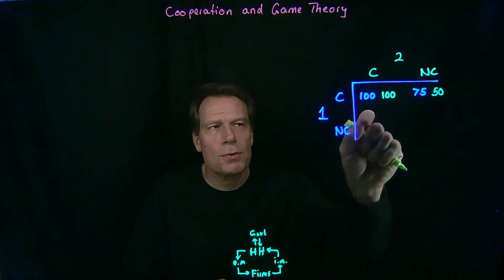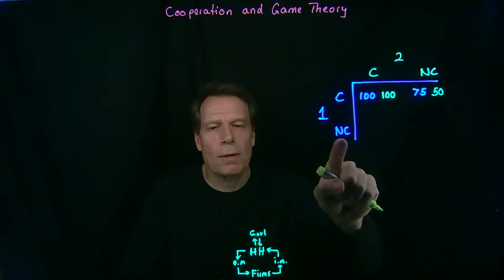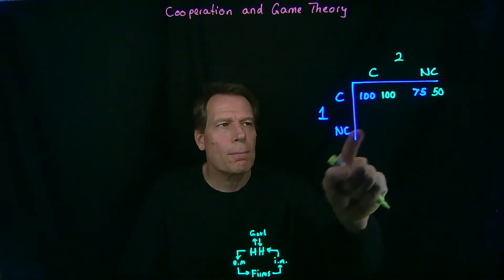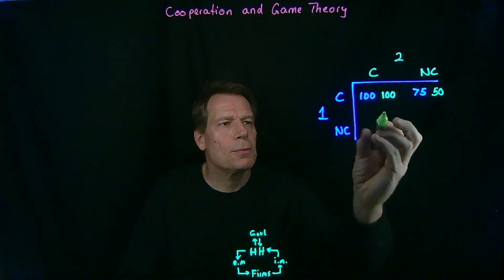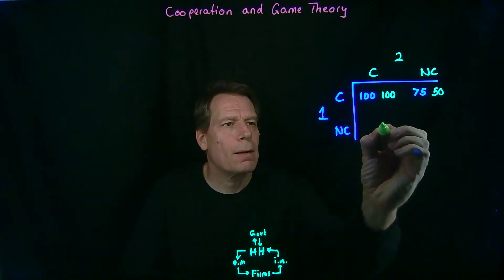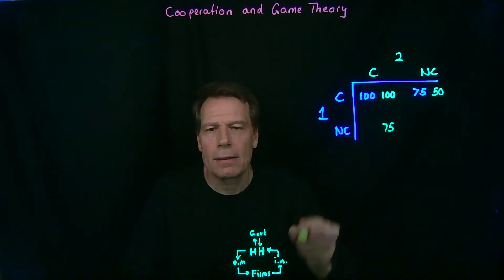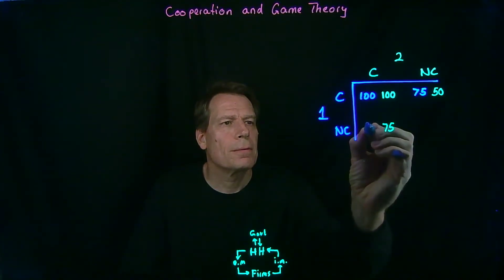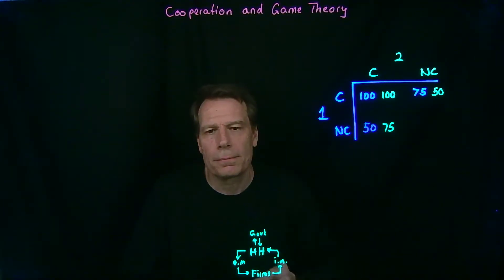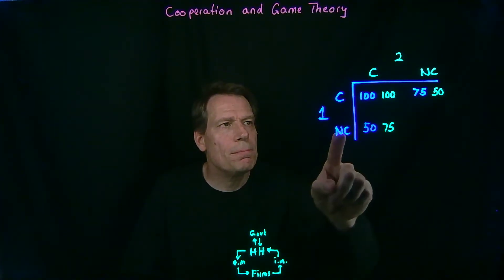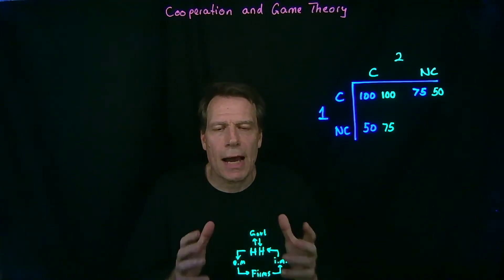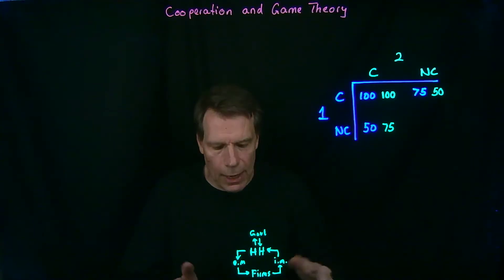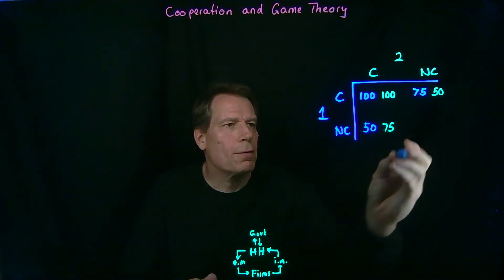If the reverse holds — Player 2 cooperates and Player 1 does not — then those payoffs will be reversed. Now Player 2 will get the higher payoff since she's cooperating, but Player 1 gets the lower payoff from not cooperating. And if neither one of them cooperates, if they're just an island unto themselves, perhaps they'll get a payoff of 30 each.